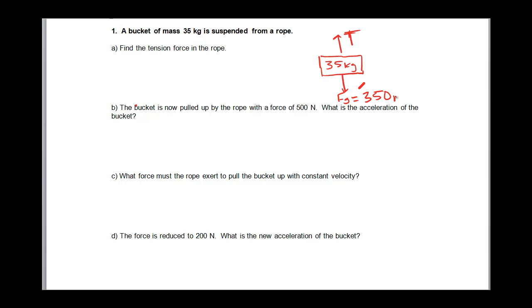Now this object has an acceleration of zero, and I know that because it's suspended from rope. If that's the case, then the upward force has to be equal to the downward force, or my net force has to be zero. In this case, the forces have to cancel. If that's how it's going to be, then tension is equal to 350 newtons.